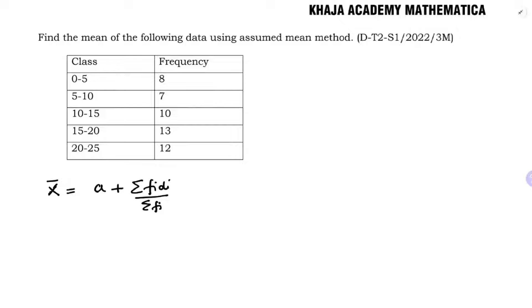Here we need to find xi, the class marks. Class marks are found by adding lower limit and upper limit and dividing by 2. Before that, the classes are continuous, so write the h value here. The h value in this problem is 5.